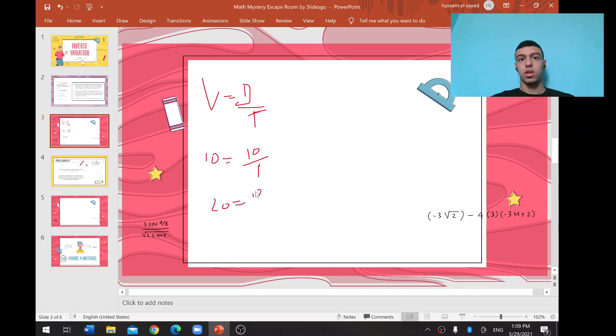20 equals 10 over time. You'll notice that the time is now half an hour. It's reduced to half as a result of doubling the speed, because time and speed are in inverse variation.